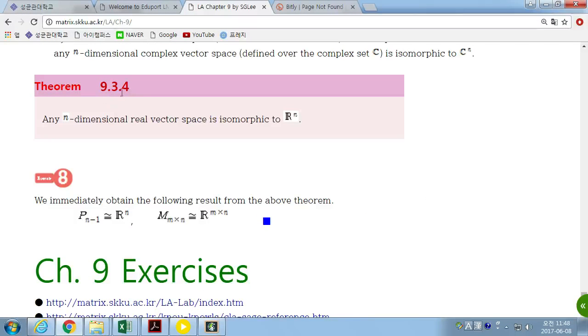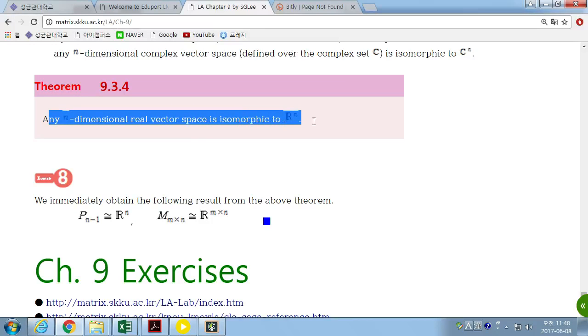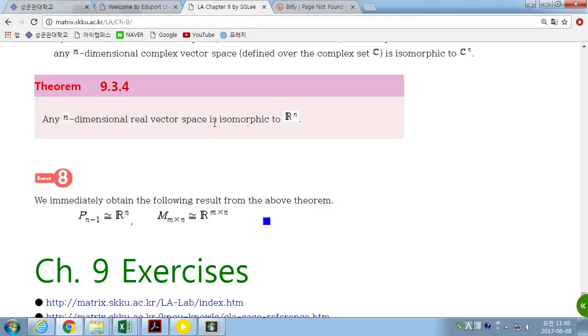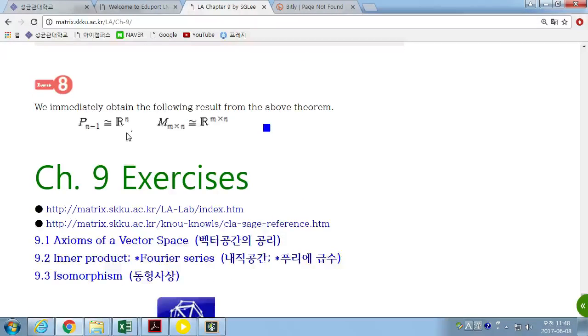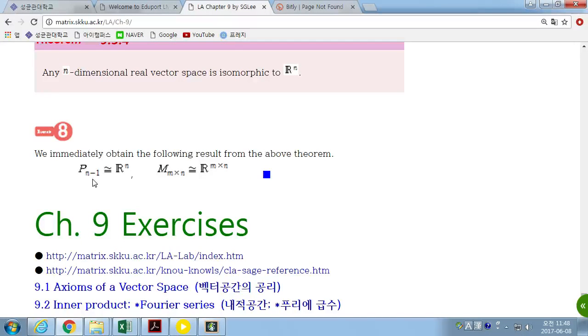Here is the last theorem. 9.3.4. Any n-dimensional real vector space is isomorphic to R^n. Any n-dimensional complex vector space is isomorphic to C^n. So, the set of polynomials of degree at most n-1 is a vector space of dimension n.